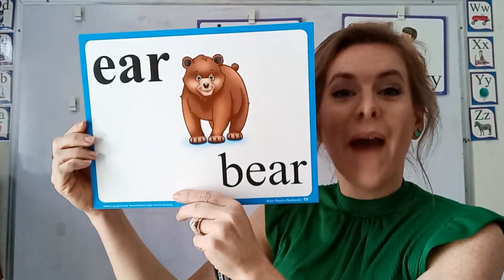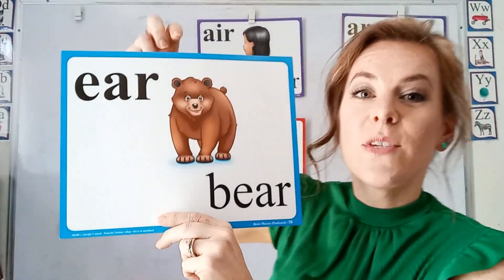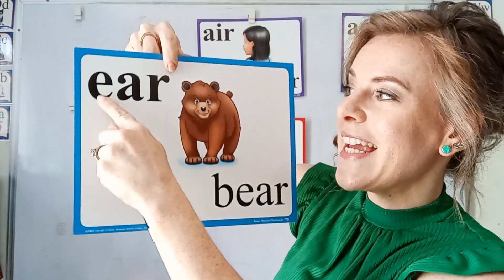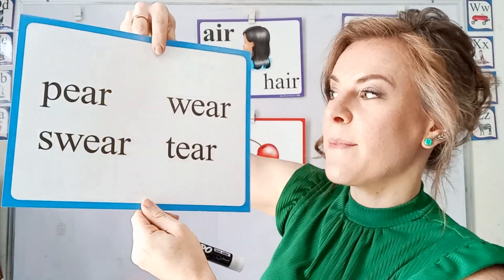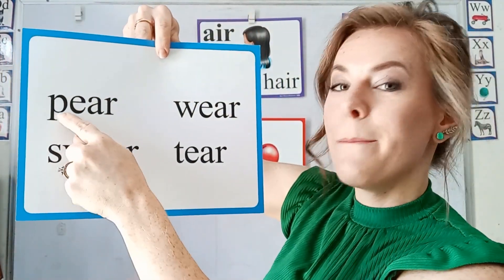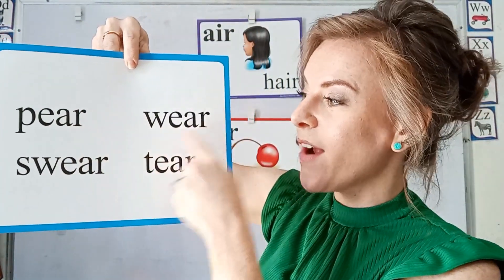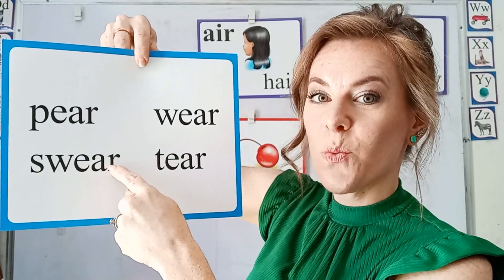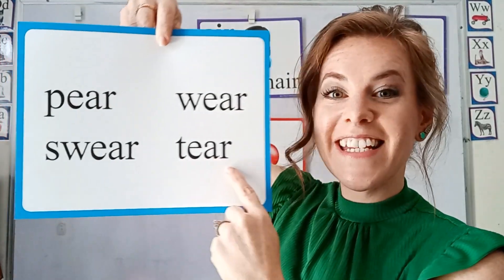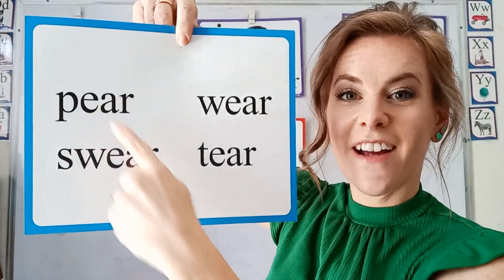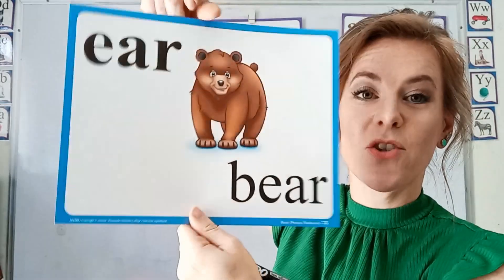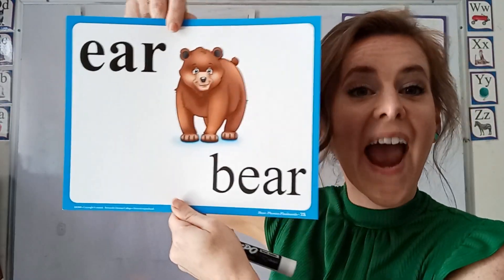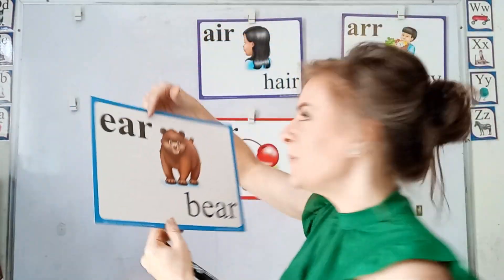This is the 'air' in bear, and you spell it E-A-R. Here are some examples: pair, wear, swear, tear. All of these have the E-A-R special sound. That's the 'air' in bear.